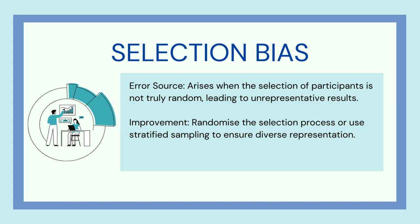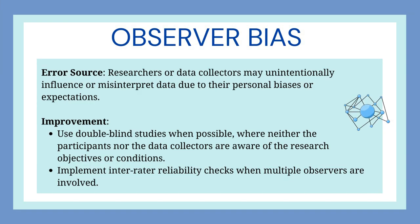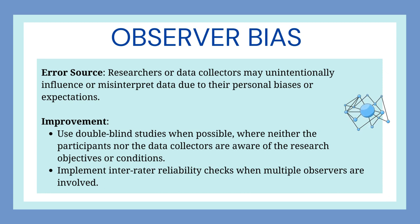Then comes observer bias, where researchers or data collectors may unintentionally influence or misinterpret data due to their personal biases or expectations. The improvement suggested is to use double-blind studies when possible, where neither the participant nor the data collector is aware of the research objectives or conditions. Double-blind studies are very important. You should also implement inter-rater reliability checks where multiple observers are involved and regularly monitoring the studies.